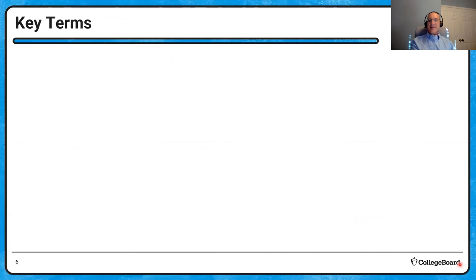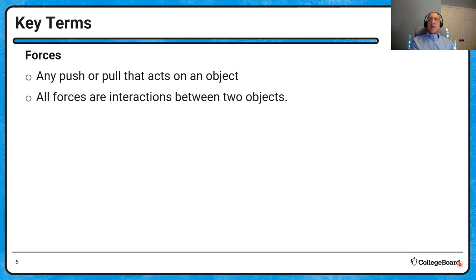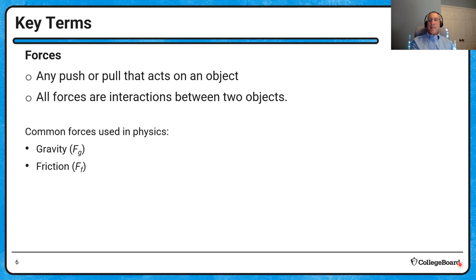Let's begin our review of forces. A force is any push or pull that acts on an object, and all forces are interactions between two objects. Everyday forces we use in physics are the force of gravity, the force of friction, the normal force, tension, and the spring force. These five are the typical forces that come up in most AP Physics 1 problems.